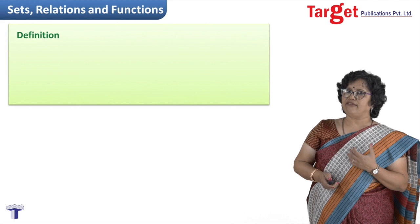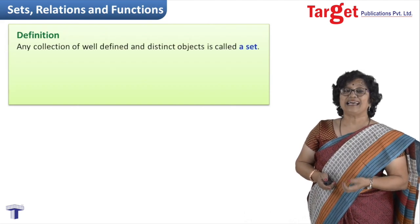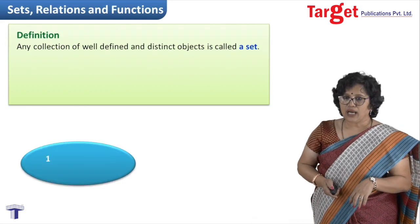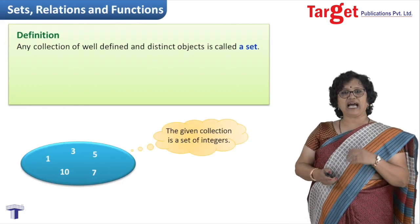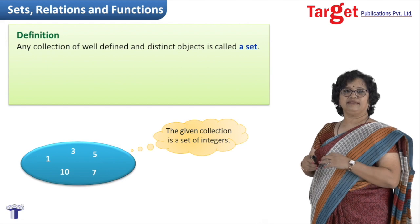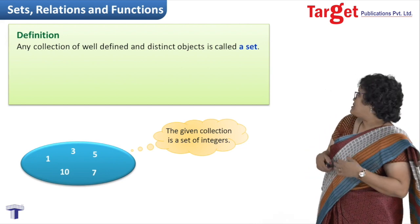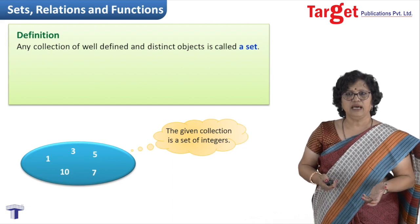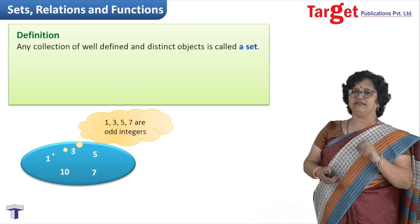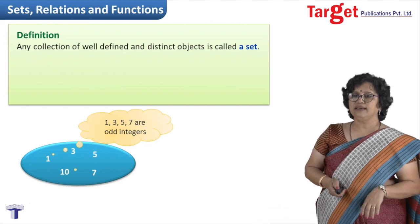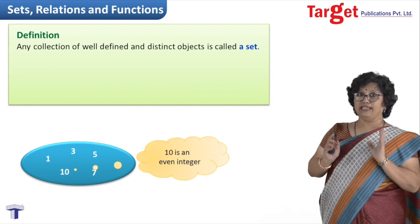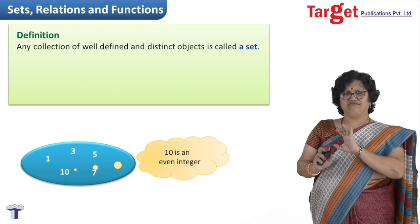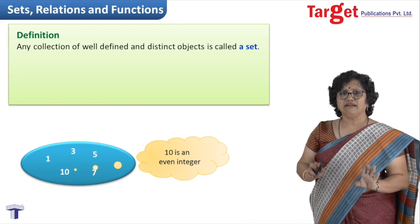So let me define what is a set. A set is a well-defined collection of objects. Now, if I have a collection where I am writing 1, 3, 5, 7, 10, it is just a collection of some integers. If I observe, I realize 1, 3, 5, 7, they are all odd integers, and 10 is an even integer. Now, if I don't need that 10 there, then you can remove.